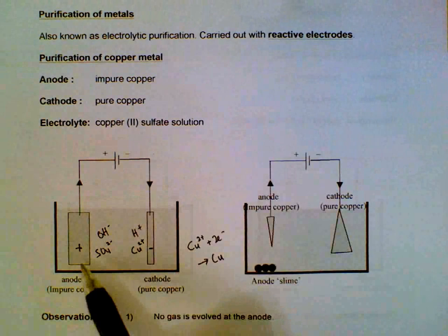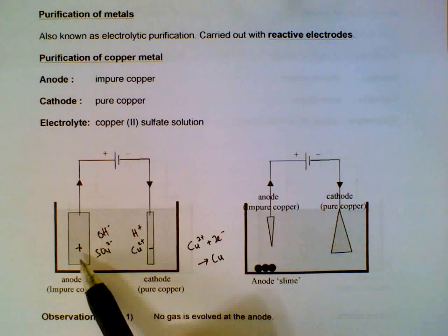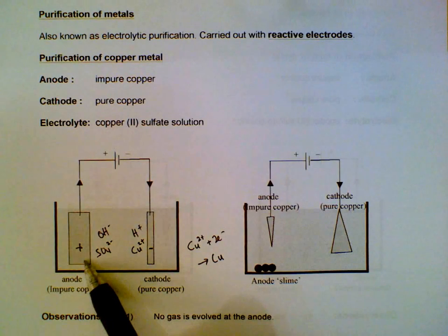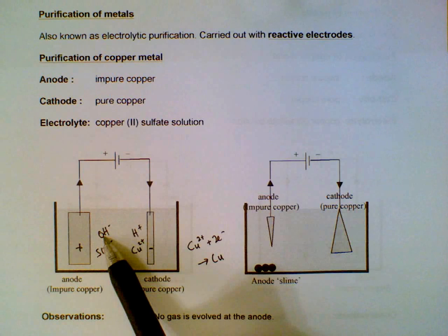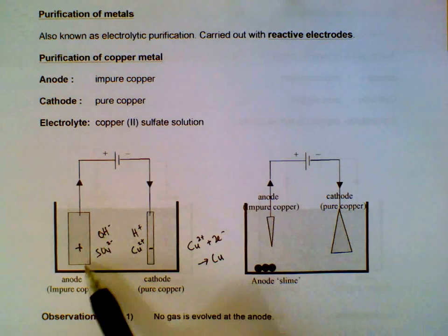The anode is where things are different compared to previous examples. If it was an inert anode, if this anode was graphite or platinum, then we will have hydroxide being discharged, we will get oxygen gas, right.